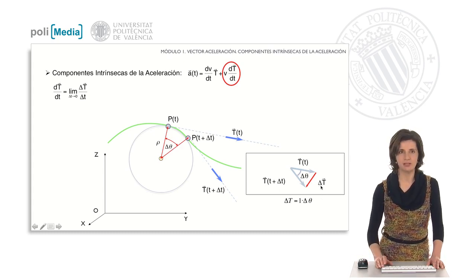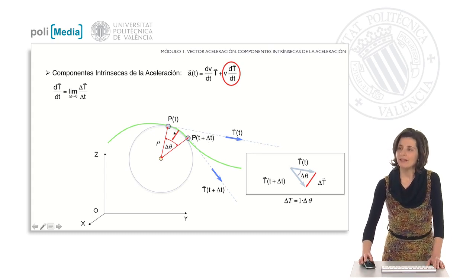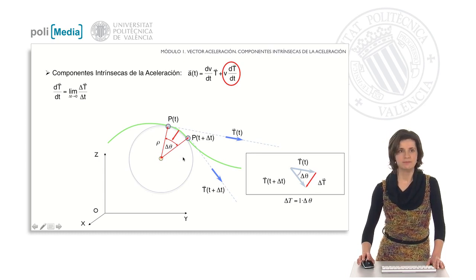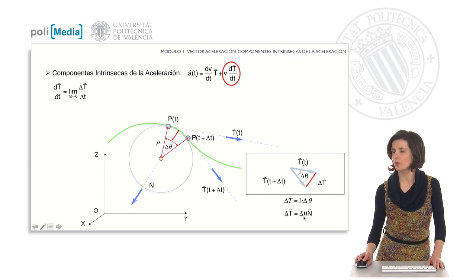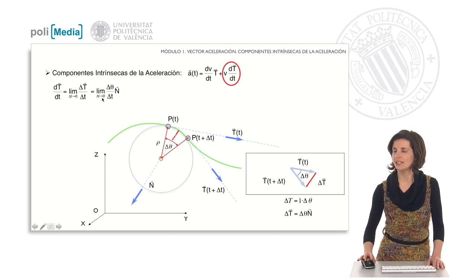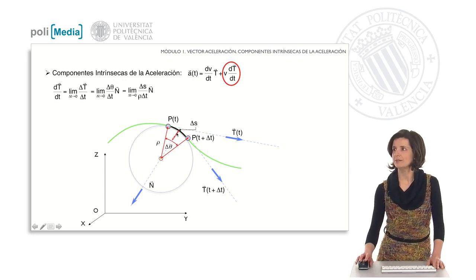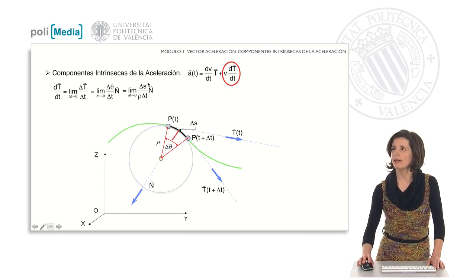The direction of the vector increment of t is perpendicular to the path at that point and towards the center of curvature. The unit vector in that direction is called the n vector. Therefore, the vector increment of t can be expressed as Δθ times the unit vector n. Substituting into the derivative expression, we obtain the limit when Δt tends to zero of Δθ divided by Δt, times the unit vector n. Expressing Δθ as a function of arc increment Δs, we get Δθ = Δs / ρ, and the ratio Δs / Δt is the modulus of the velocity.